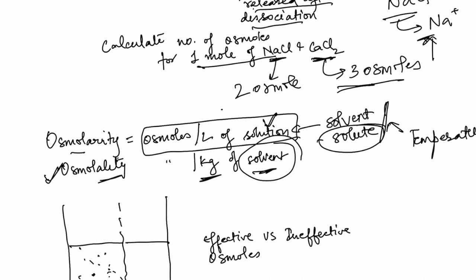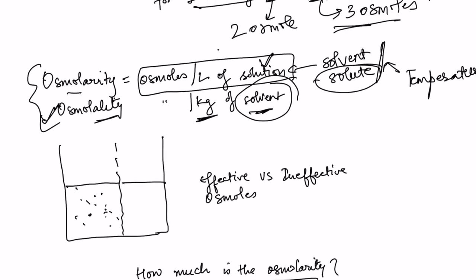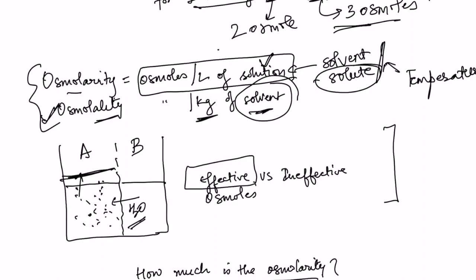Why is it important to know osmolarity? Because more the osmolarity, more the solution will draw in water. This concept applies to osmosis — osmolarity is important for passive diffusion of water. Suppose side A has solutes that cannot cross a membrane permeable only to water. Water will move from B to A, and the level on side A will rise. Such solutes that cannot cross the membrane are known as effective osmoles.